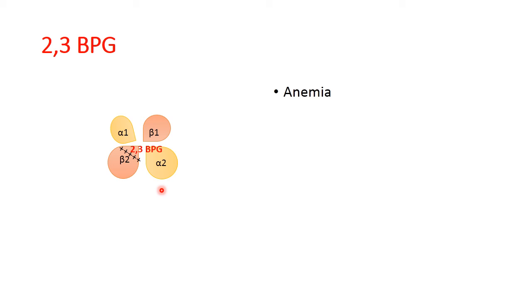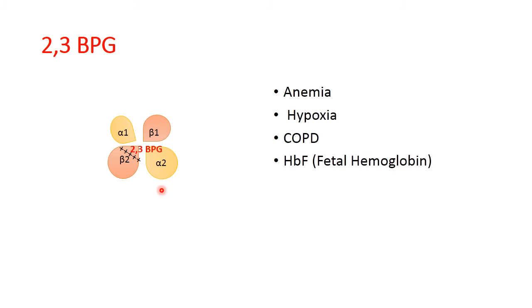In cases of anemia or hypoxia at high altitude, where there is reduced partial pressure of oxygen and reduced supply to tissues — either due to reduced hemoglobin content or reduced oxygen content — there is a compensatory increase of 2,3-bisphosphoglycerate. Similarly, in chronic obstructive pulmonary disease, there is a compensatory increase of 2,3-bisphosphoglycerate to combat hypoxia due to airway obstruction.